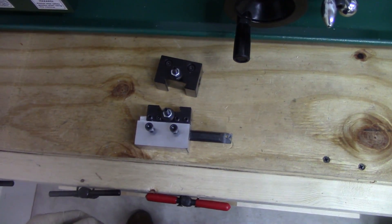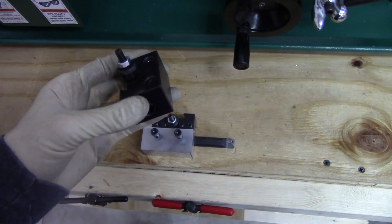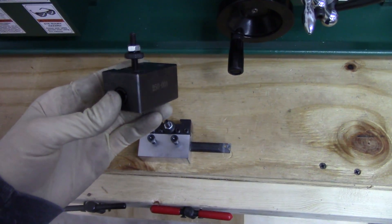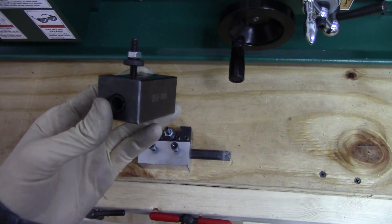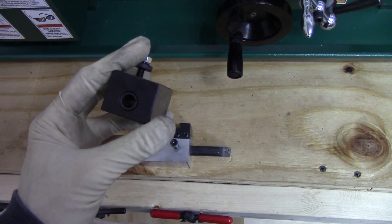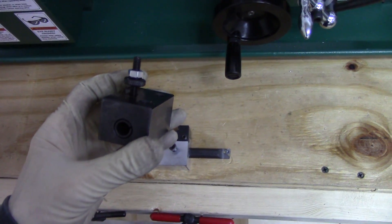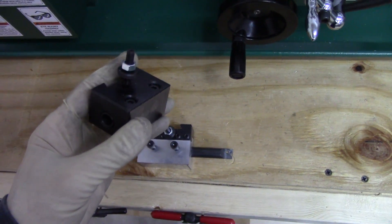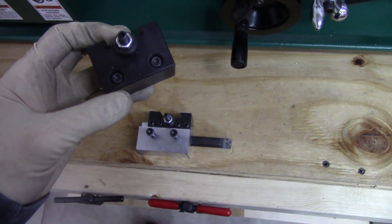This is a 3 eighths boring bar holder and it works just fine but the 3 eighths boring bar set that I have is crap. It doesn't cut very well. I went ahead and purchased a half inch boring bar with an insert because I wanted to use it on the milling machine and the boring head that I have takes half inch inserts.